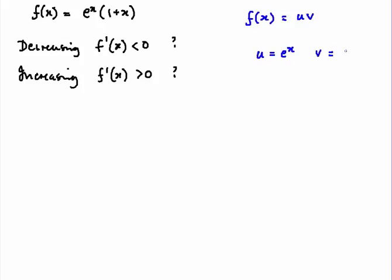u and v are the two functions. u is e to the x and v we can see is 1 plus x. Differentiate the u, e to the x, very easy. Differentiate the v, 1 plus x, once again very nice, very easy. The product rule tells us that the differential is uv' plus vu'.